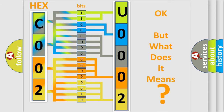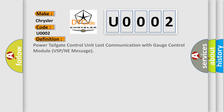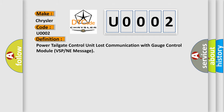So, what does the diagnostic trouble code U0002 interpret specifically for Chrysler car manufacturers? The basic definition is: Power tailgate control unit lost communication with gauge control module — VSP or NE message.